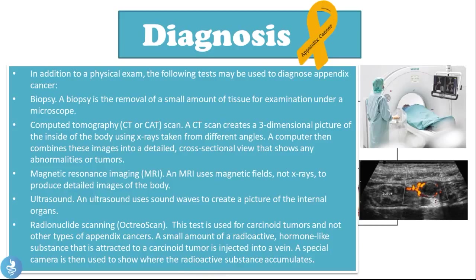In addition to a physical exam, the following tests may be used to diagnose appendix cancer: a biopsy (removal of a small amount of tissue for microscopic examination); a CT scan, which creates a three-dimensional cross-sectional picture of the inside of the body using x-rays; an MRI, which uses magnetic fields to produce detailed images; an ultrasound, which uses sound waves to create pictures of internal organs; and a radionuclide or octreotide scan, used specifically for carcinoid tumors, where a small amount of radioactive hormone-like substance is injected into a vein and a special camera detects where it accumulates.